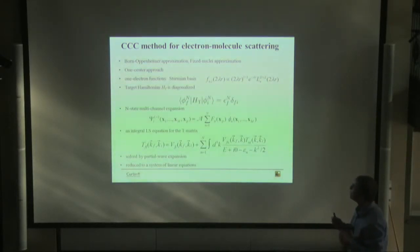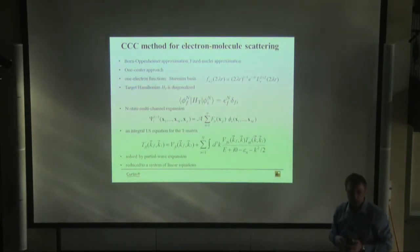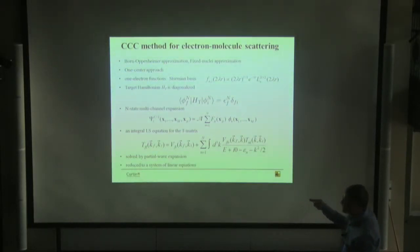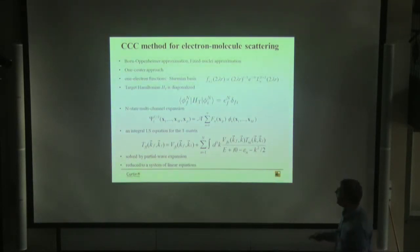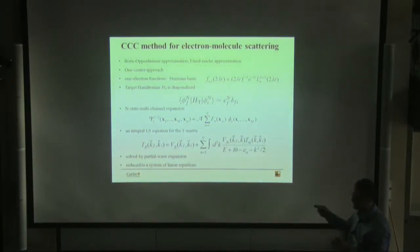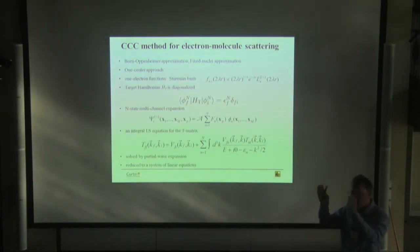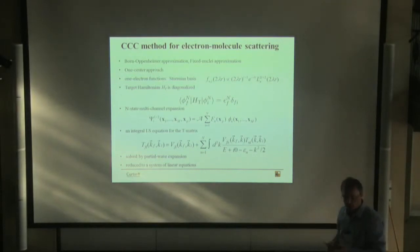I'd like to spend the remainder of my talk on electron-molecule scattering. What we would like to do is generalize the convergent close-coupling method to electron scattering from molecules, developing a technique that is relatively easy to apply to a particular class of molecules — those that are easy to describe within a one-center approach, namely diatomics and hydrides.